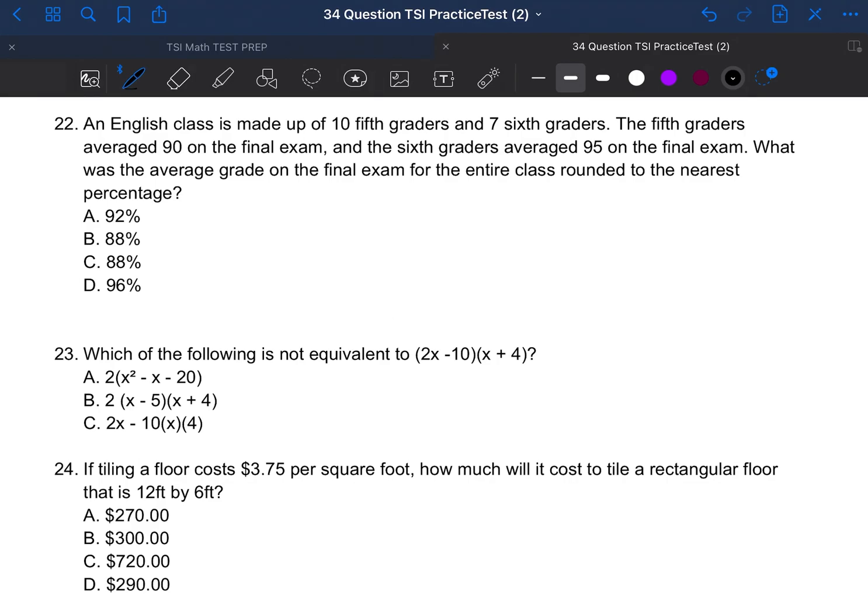So number 22 says, an English class is made up of 10 fifth graders and 7 sixth graders. The fifth graders averaged 90 on the final exam, and the sixth graders averaged 95 on the final exam. What was the average grade on the final exam for the entire class rounded to the nearest percentage? Okay, so that's a lot of information. Instead of feeling overwhelmed by this amount of information, I'm just going to go ahead and take some notes.